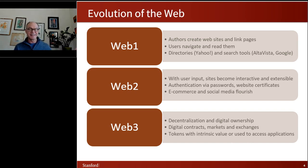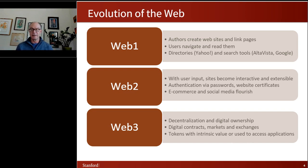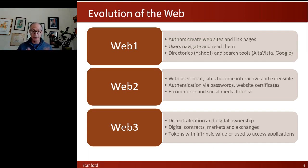There was a struggle at the time: would we use directories like Yahoo, a human-created index into the web, or automated search like AltaVista and Google? We didn't know which would be more practical. In retrospect, it's obvious — no group of 50 or 100 people could index everything on the web. Automation took over. This reminds us that in the early stage of a technology, you don't know which parts will become the most successful.